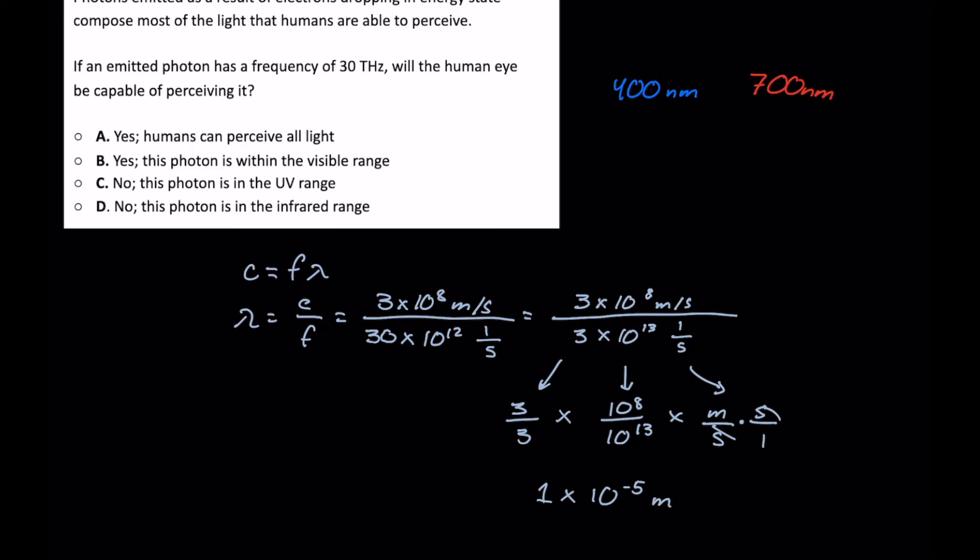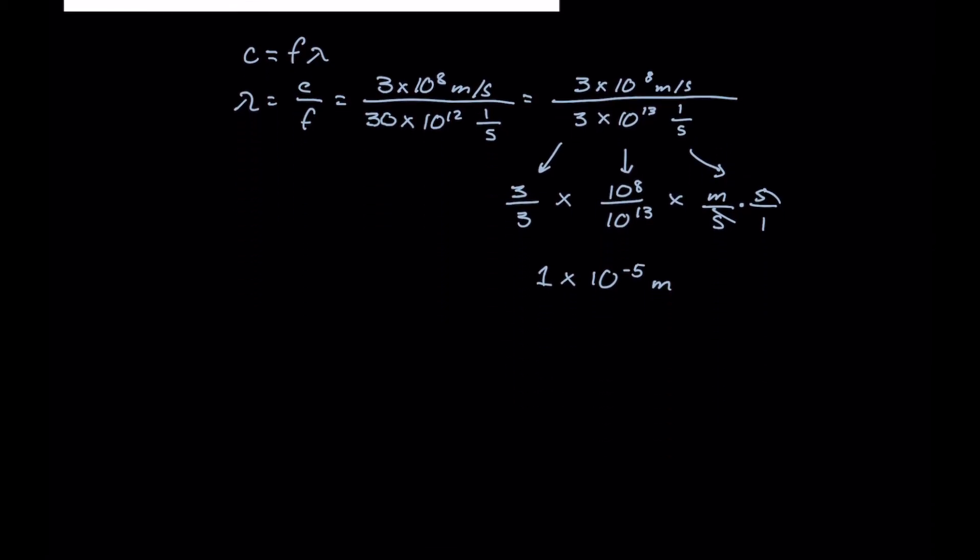Unfortunately, that's pretty difficult to compare to this range of 400 to 700 nanometers, so we might have to do an extra step here of making sure that we're able to convert this into nanometers. And we should know that SI prefix nano means 10 to the negative 9th.